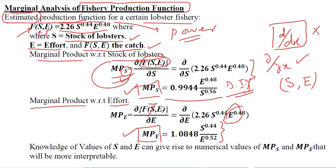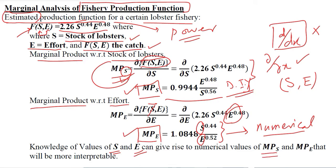We still don't have a numerical answer. If we have an overall numerical answer, it would be easy to understand and interpret. At this stage we don't have the numerical answer because we do not know the precise values of S and E. If we know the values of the stock of the lobster and the effort we are putting in, no matter what units they have, they will enable us to get the numerical answers of MPS and MPE, which will be more interpretable and comprehensible.